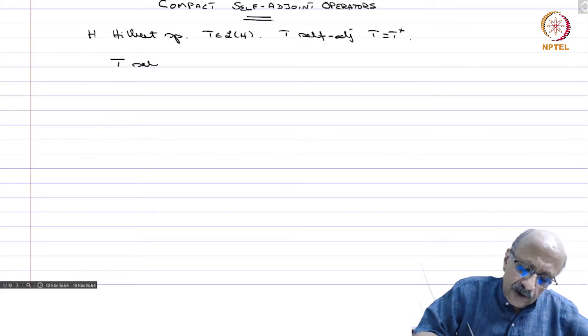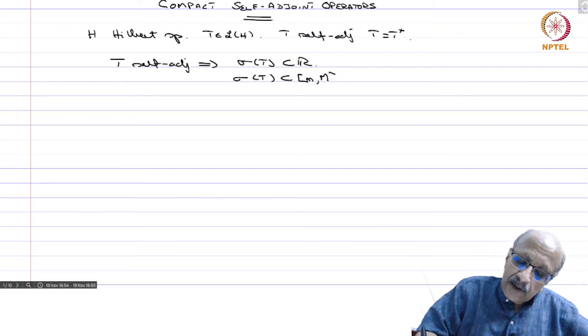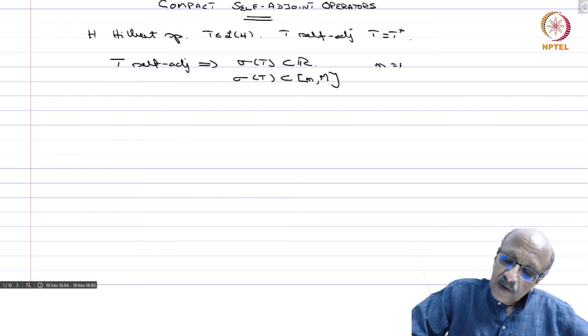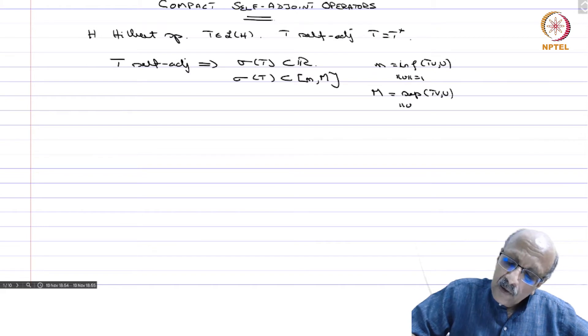T self adjoint implies sigma T is contained in R and in fact, sigma T is contained in [m,M] where m is the inf of <Tv,v> with norm v equals 1 and M equals to sup of <Tv,v> with norm v equal to 1. And you also saw that m and capital M belongs to sigma T. This was done in the exercises of the Hilbert space chapter.